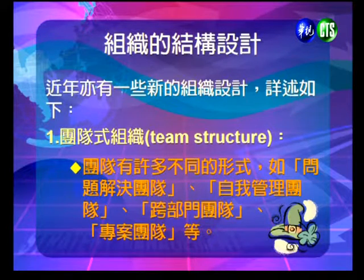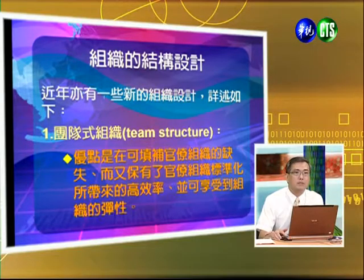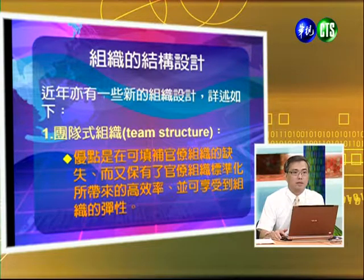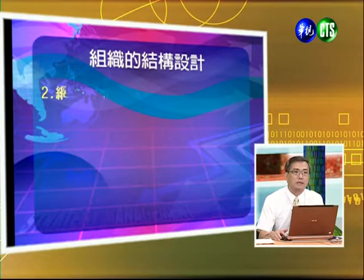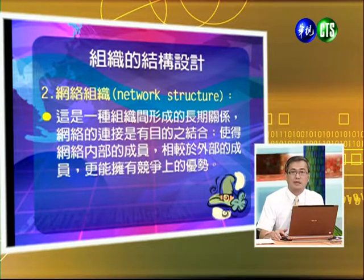除了傳統的組織設計以外，目前環境中也有新的組織設計方法。第一個是團隊式的組織，它是打破部門間的障礙，將高層的決策直接下放到組織當中，團隊中的成員也可以從專才變成通才。團隊有許多不同的形式，如問題解決團隊、自我管理團隊、跨部門團隊或專案團隊。優點是可以彌補官僚式組織的缺點，又可以保有標準化帶來的高效率，且可以享受組織的彈性。第二種是網絡的組織結構，是一種組織間形成的長期關係。